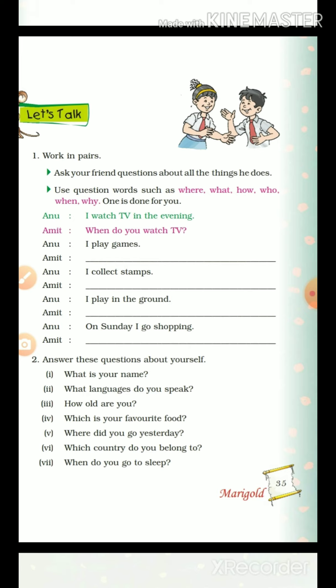The first one has been done for us. Anu answered: 'I watch TV in the evening.' So Anu said she watches TV in the evening. From this answer, we can find out which question word Amit used. Since Anu is telling when she watches TV, Amit must have asked 'kab?' — so Amit asked the question: 'When do you watch TV?' 'When' ka matlab hota hai 'kab.'